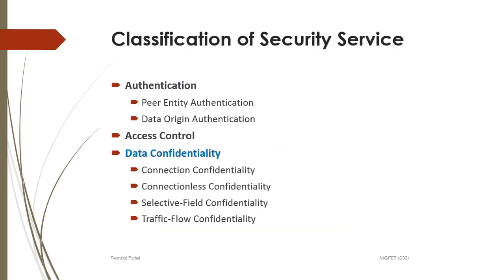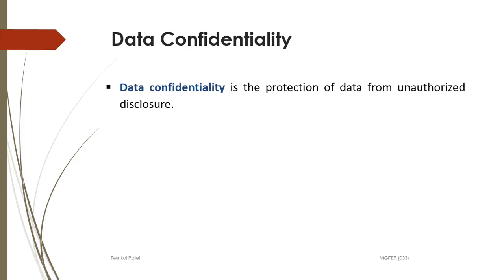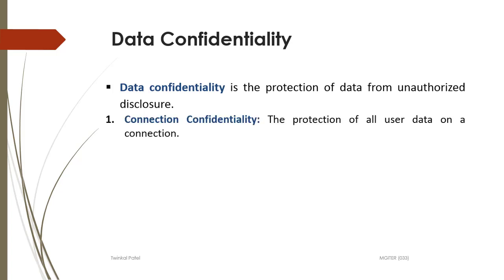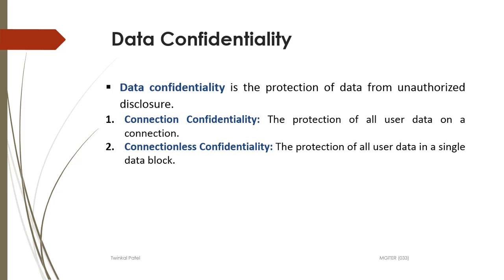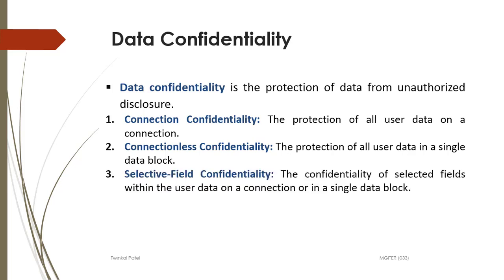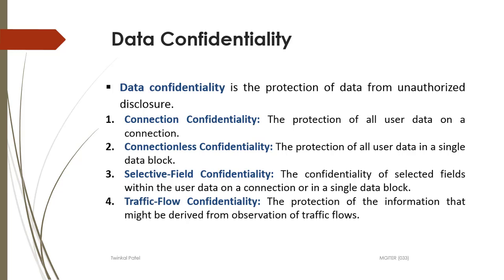Next security service is data confidentiality. Data confidentiality means protection of data from unauthorized disclosure — in simple terms, hiding the data. The data being transferred between sender and receiver should be hidden. The subtypes are: connection confidentiality, where all connected users' data remains confidential; connectionless confidentiality, where data in a single data block remains confidential; selective field confidentiality, where selected fields within the user data remain confidential; and traffic flow confidentiality, where information derived from traffic flow remains confidential.